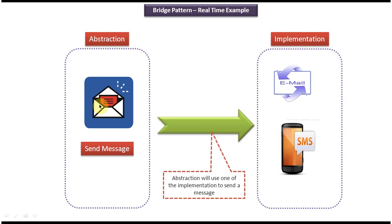On the left side you can see the abstraction. Suppose I want to send a message to a person. Then what I can do is, I can email the message and send it to the corresponding person, or I can SMS the message and send it to the corresponding person. So I have two options to send the message — I can use email or I can use SMS to send the message to the person.